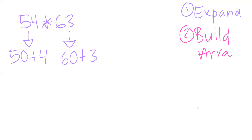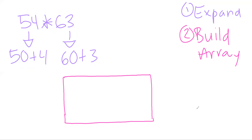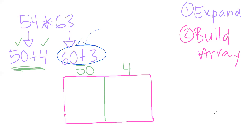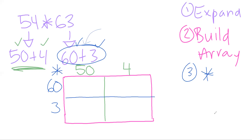Now we build the array for the model. I'll draw the rectangle and give myself good space. I like to use the first expanded number as my columns, so I have two columns: one named 50 and one named 4. The second number gives my rows — I have two rows, named 60 and 3.